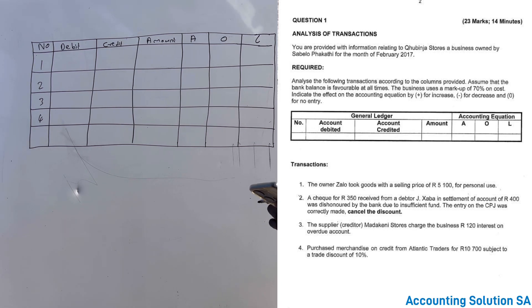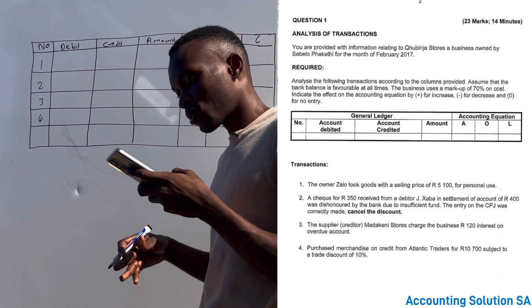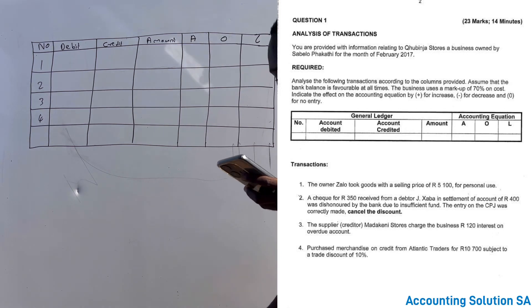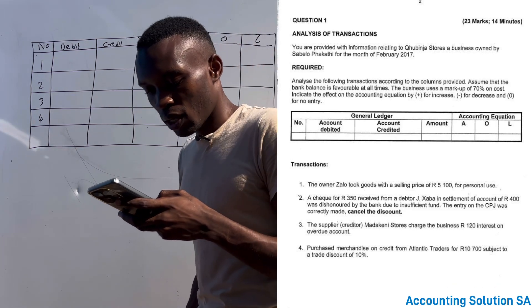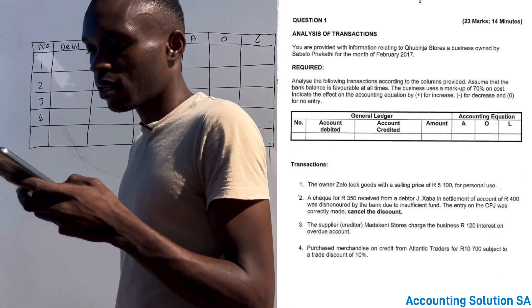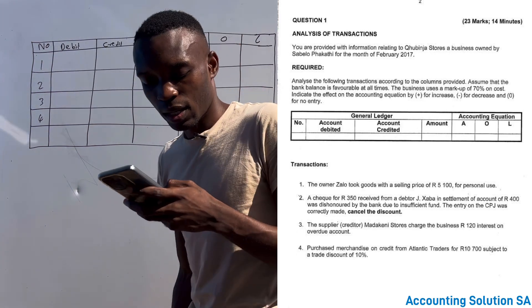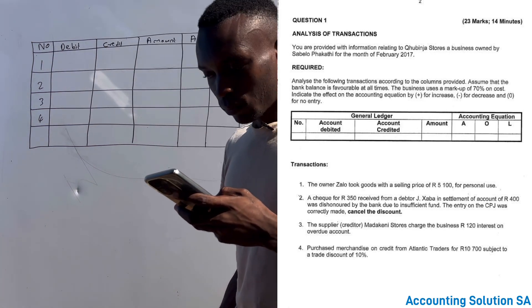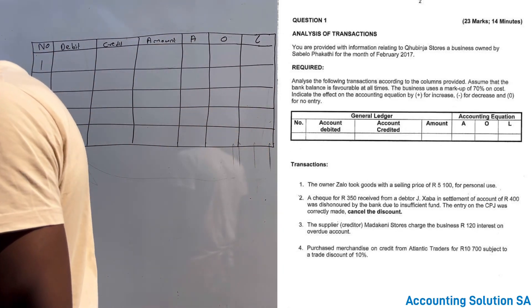Transaction number one. Maybe before we go to the transactions, they said analyze the following transactions according to the columns provided. Assume that the bank is favorable all the time and the business uses a markup of 70 percent on cost. Indicate the effect on the accounting equation: plus, minus for decrease, and zero for no entry. Now let's check this.